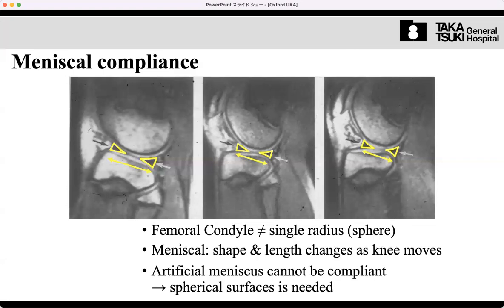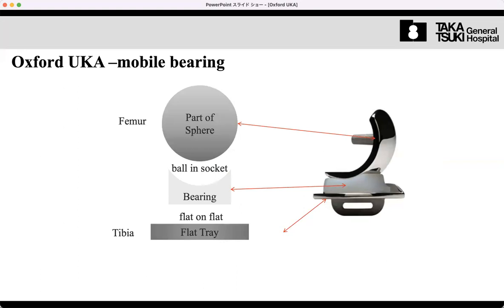The Oxford knee changes the shape of the bearing. Everyone is fixed, is solid - the femur bearing. But we can get perfect conformity between femur, bearing, and tibia. It is impossible to change the radius of femur. That is the innovation of this Oxford knee.